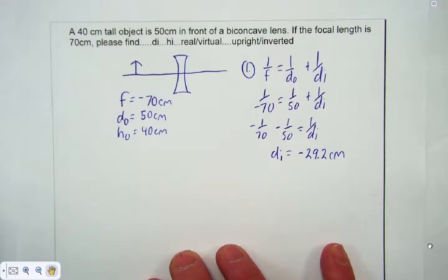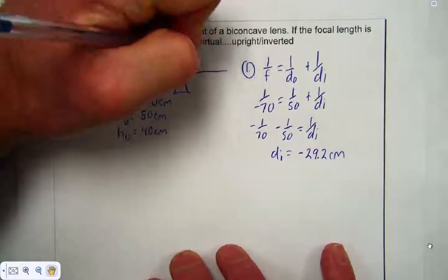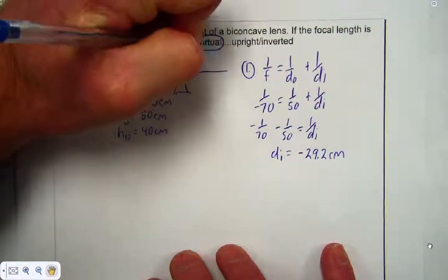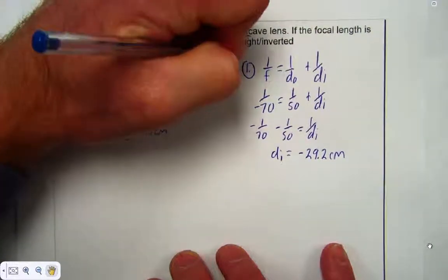That negative tells us a few things. It's going to tell us that it is virtual. A negative d_i image is always virtual, and virtual images are always upright.